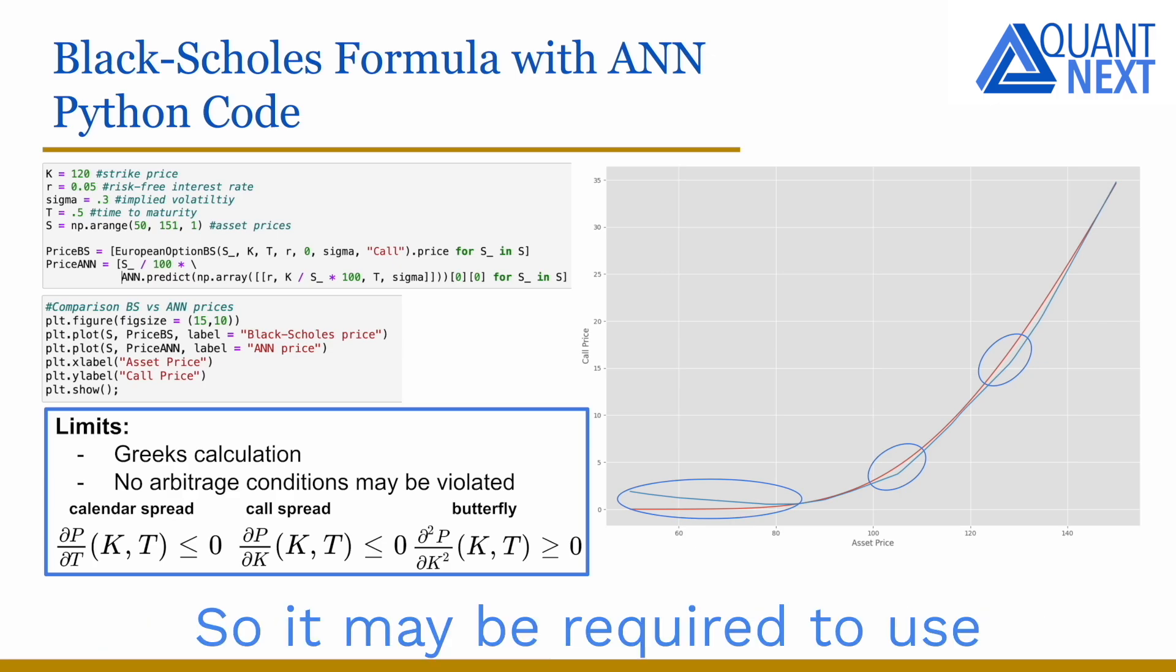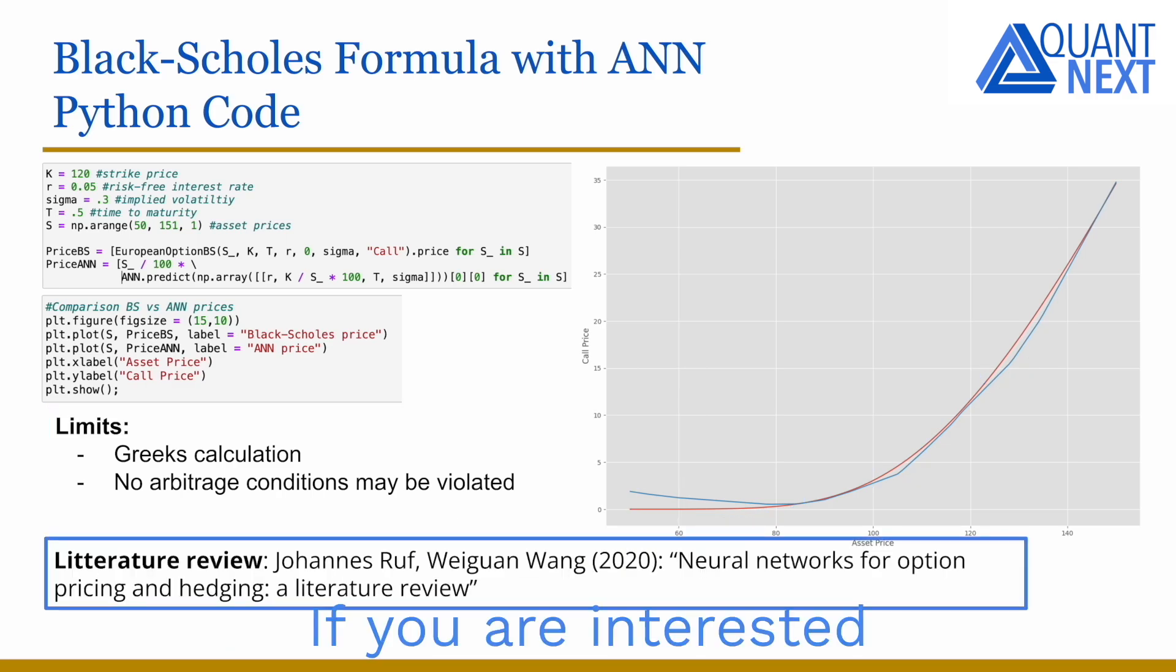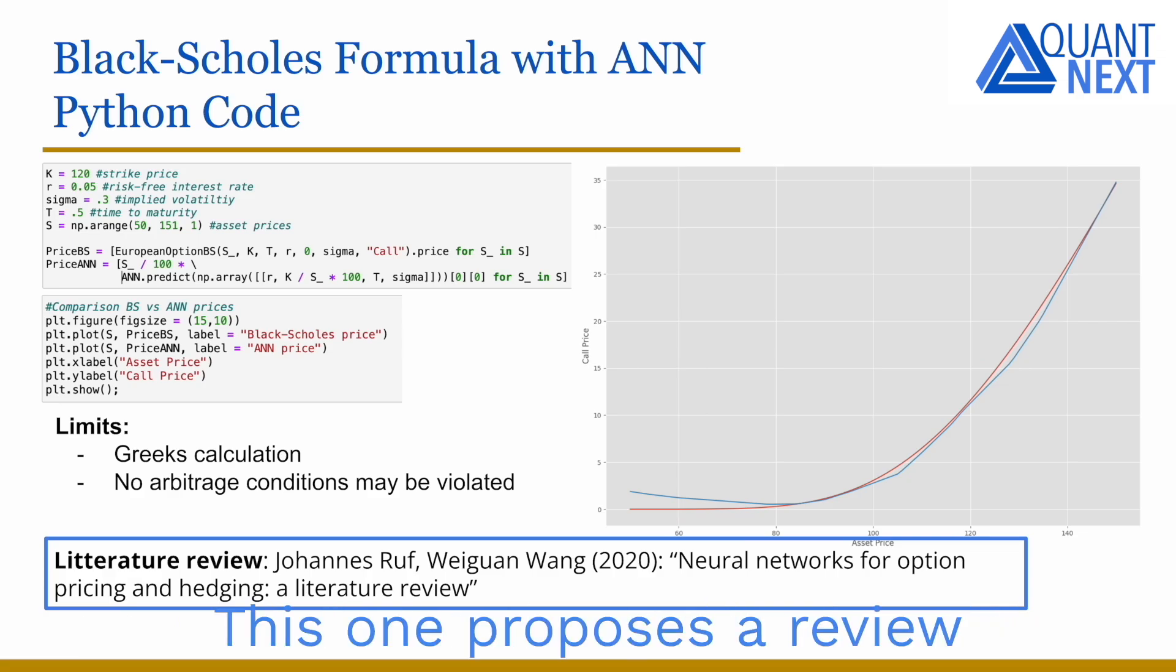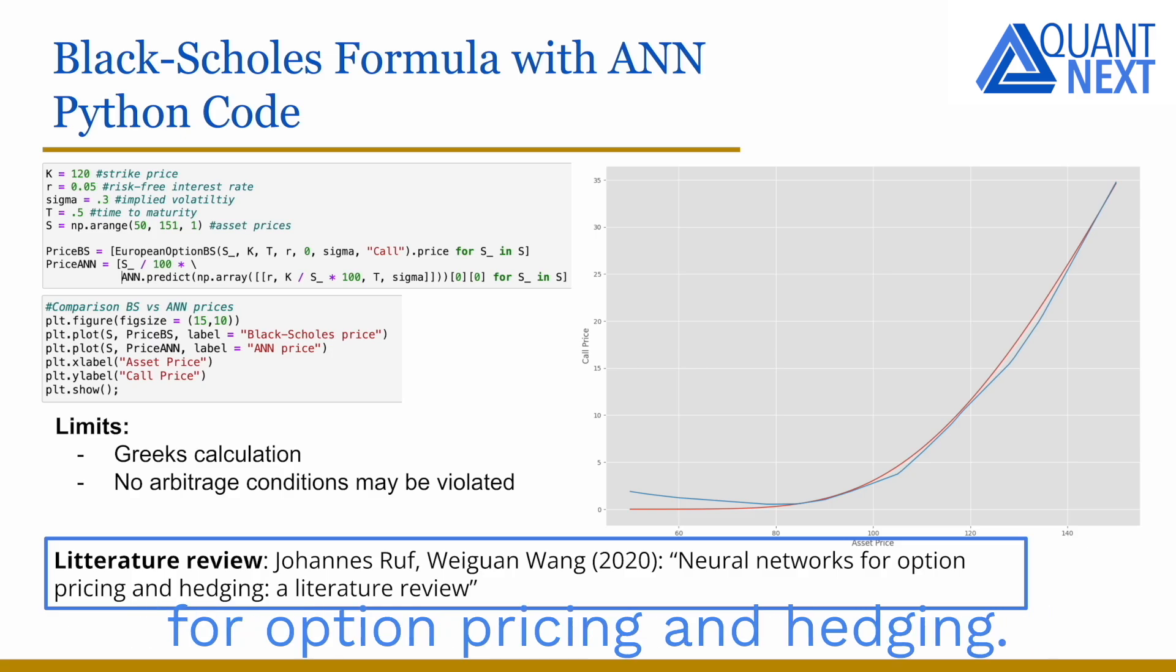If you are interested in further reading, you will find many academic articles on the topic. This one proposes a review of the literature on neural networks for option pricing and hedging.